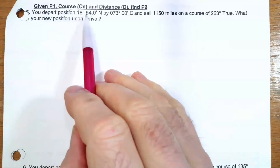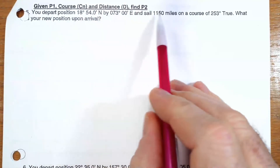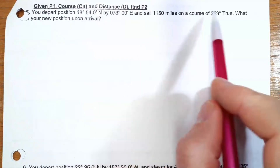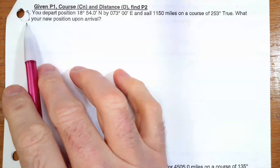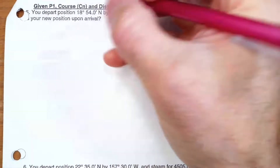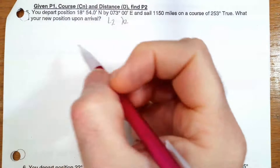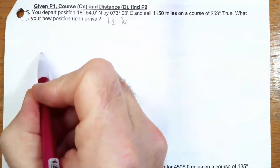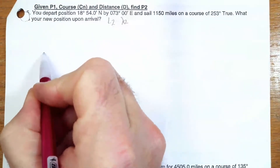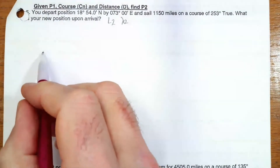So my departure position is given as a latitude and a longitude. I'm going to go a distance and a course. The question is, what is the new position of arrival? They want to know what L2 and longitude 2 are — the coordinates of the arrival point. So the first thing I'm going to do is draw my triangle. I like to put my pencil down, make a little dot — that is going to be the point of departure.